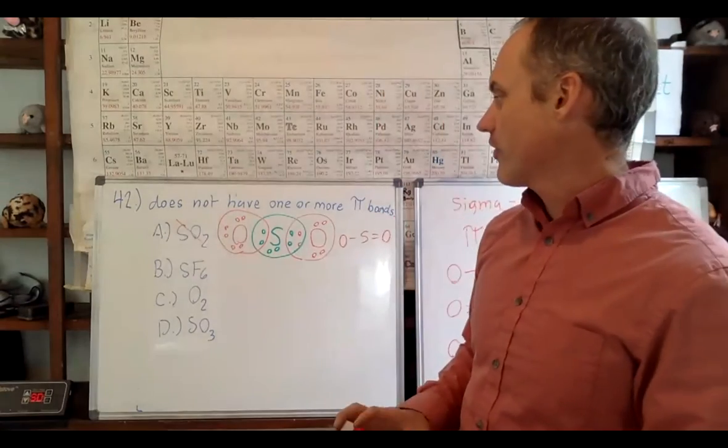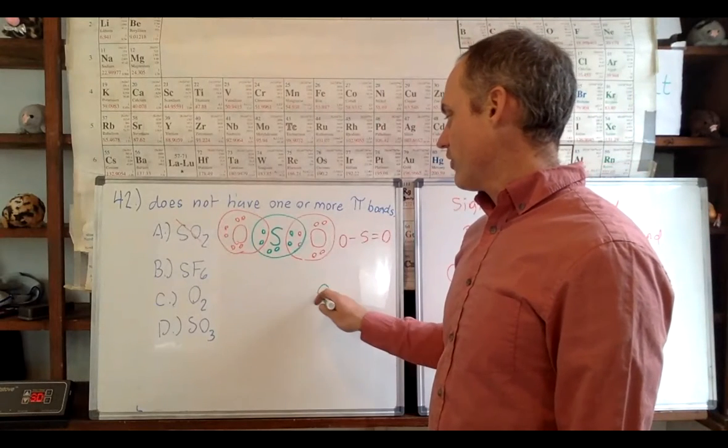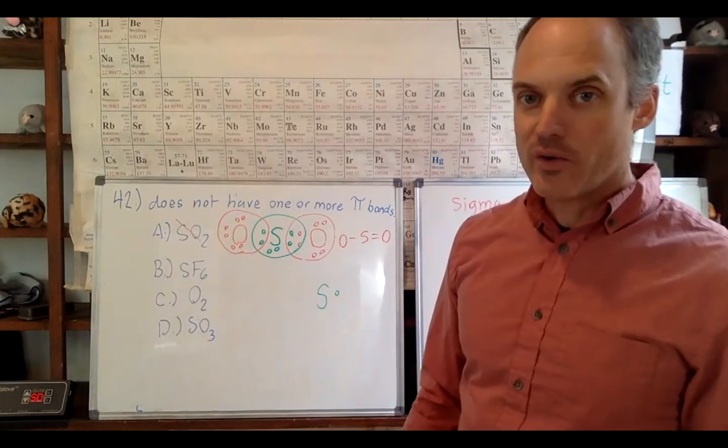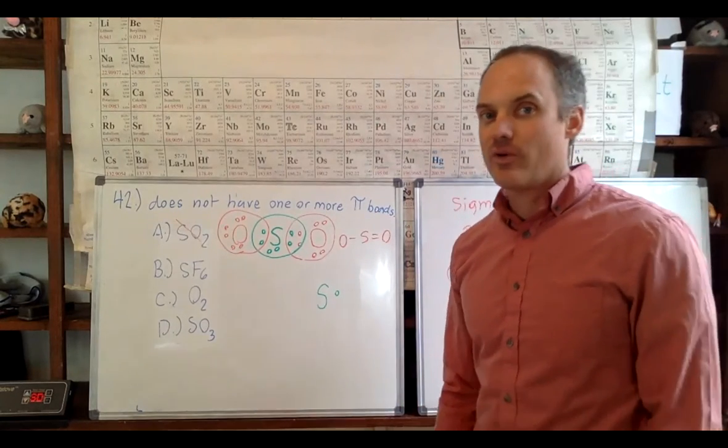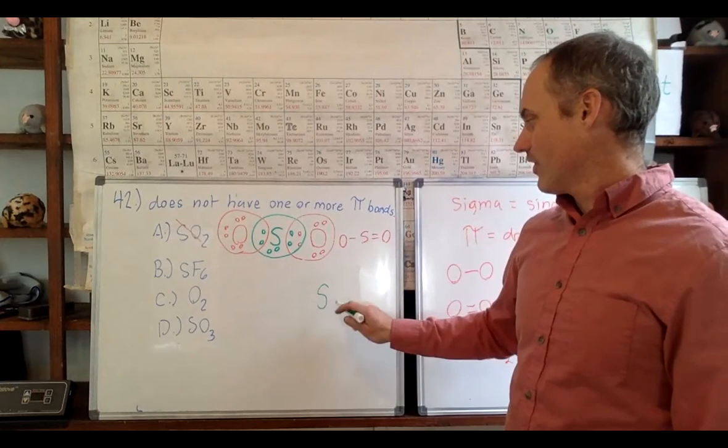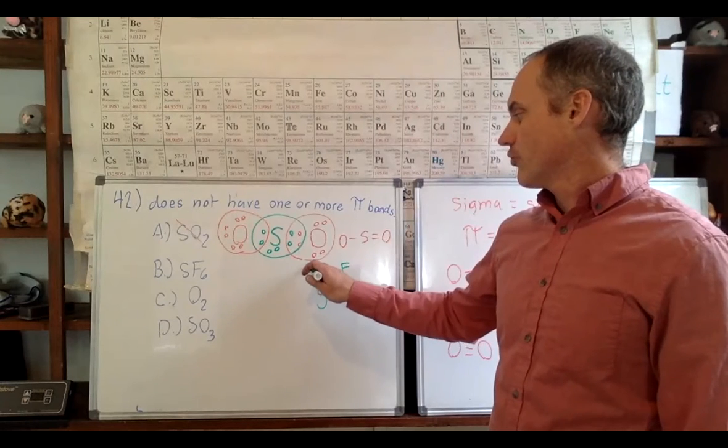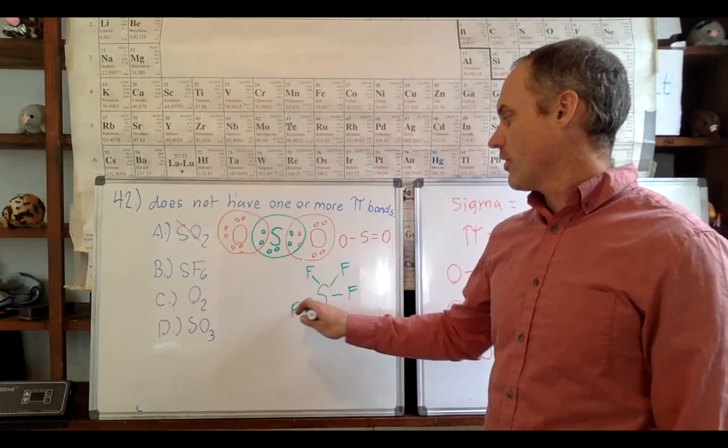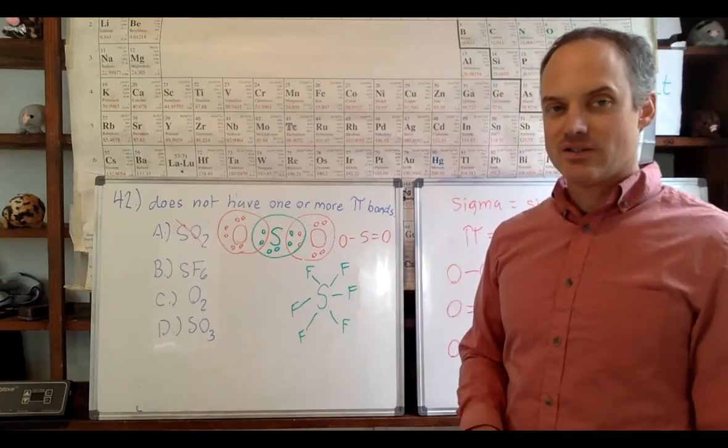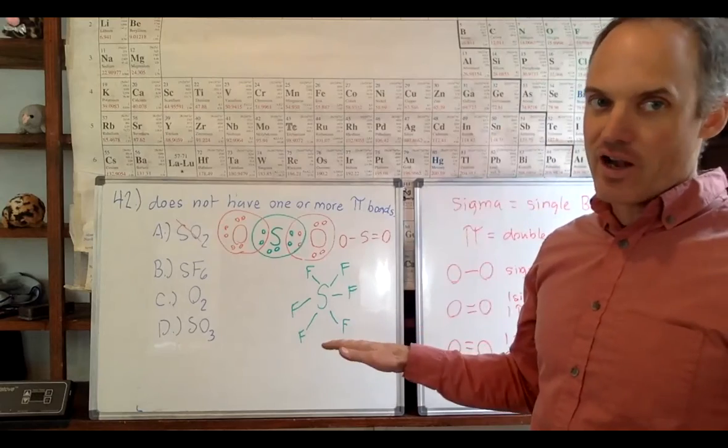All right, let's look at SF6. Like we mentioned, sulfur has six electrons and all six of them are going to be bonded to by a fluorine. Okay, so can we even draw this? Let's just do it like this, so we have one, two, three, four, five, and six kind of evenly spread out.